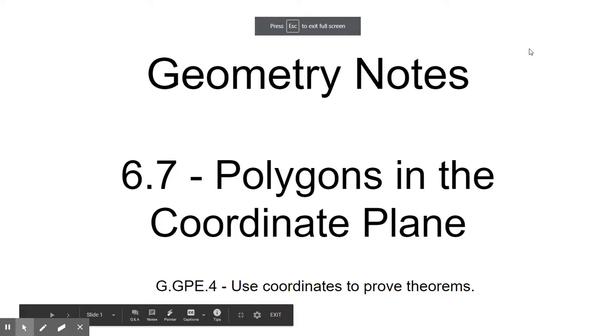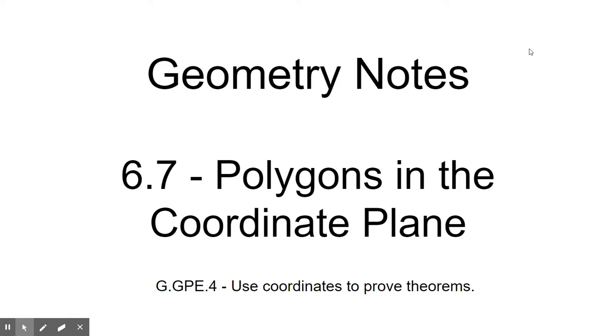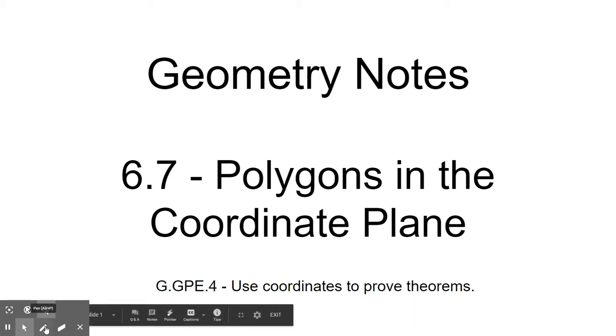All right, geometry. So 6.7, polygons in the coordinate plane. This is where geometry incorporates the algebra into quadrilaterals. We're going to take a look at these different quadrilaterals in the coordinate plane and try to show what special type of quadrilateral they might be.